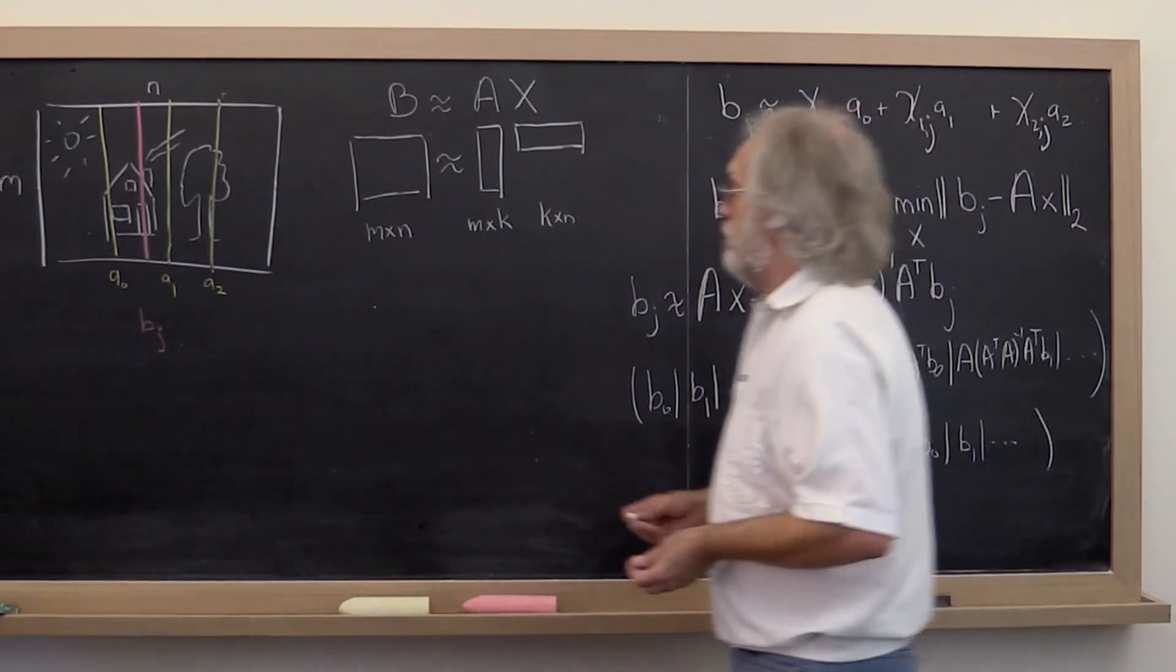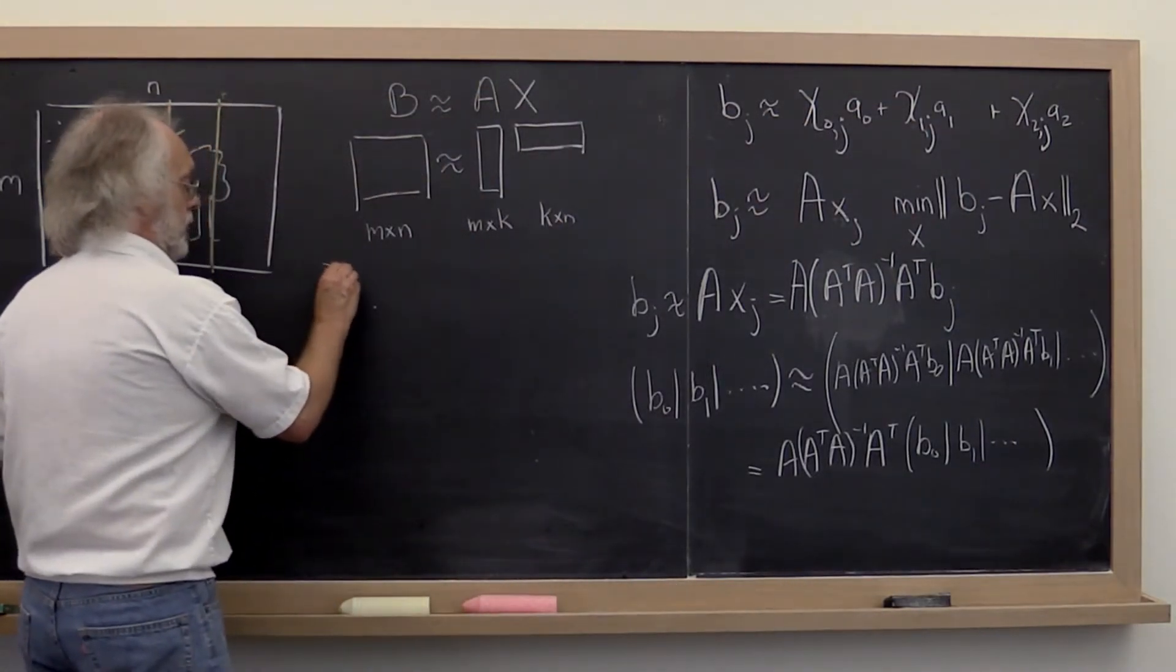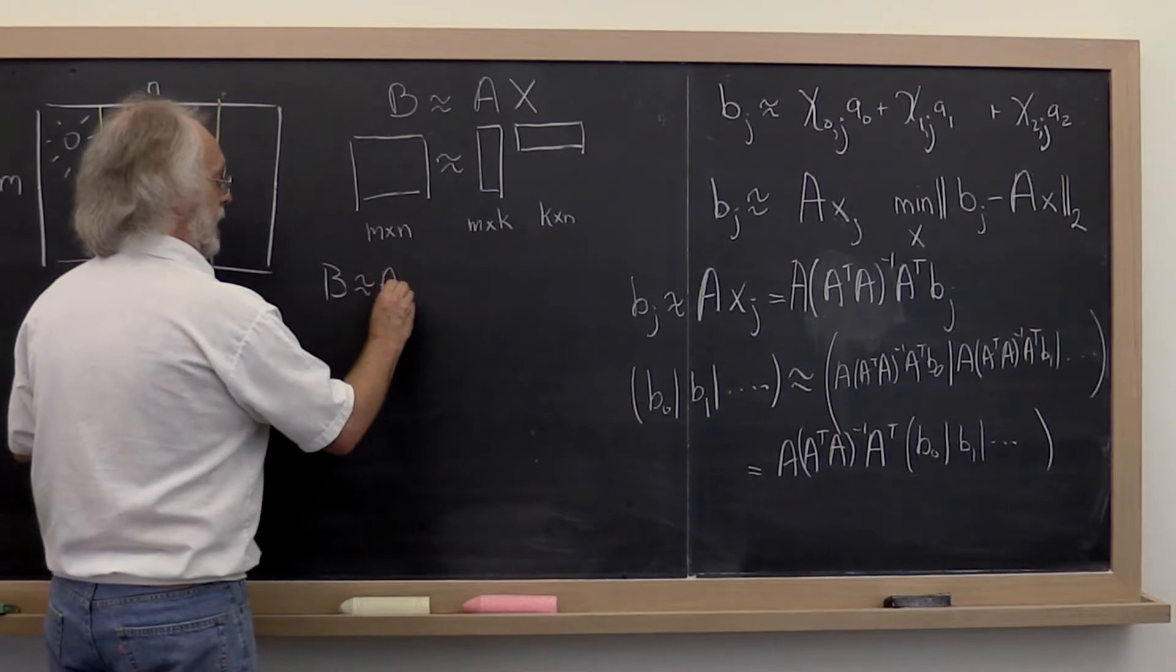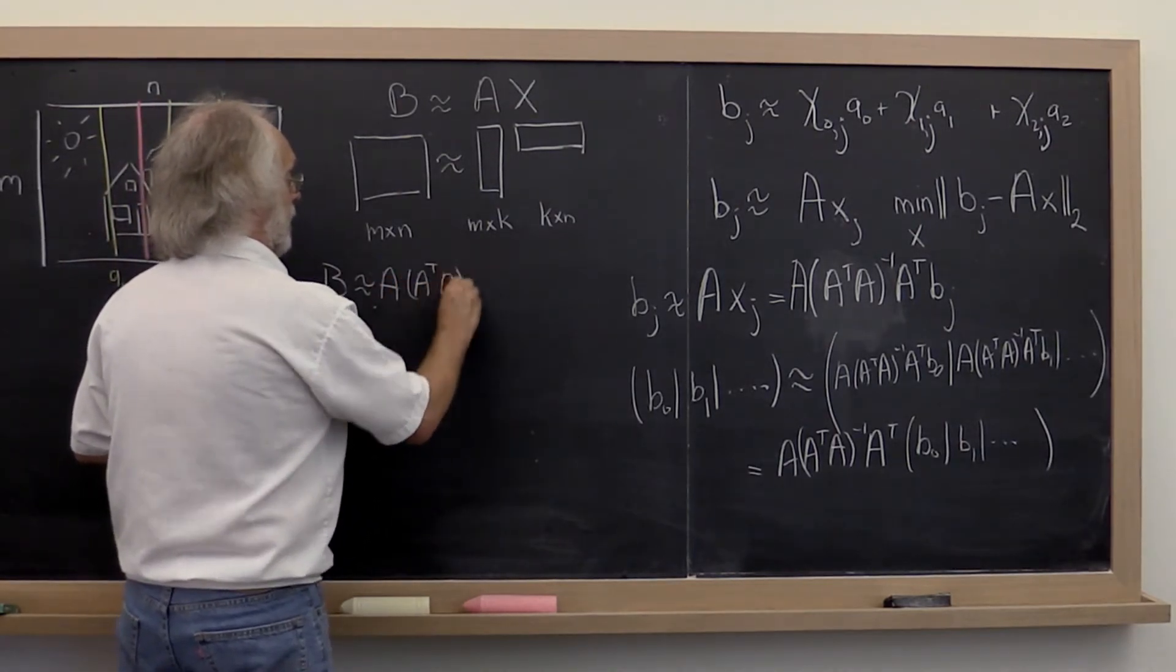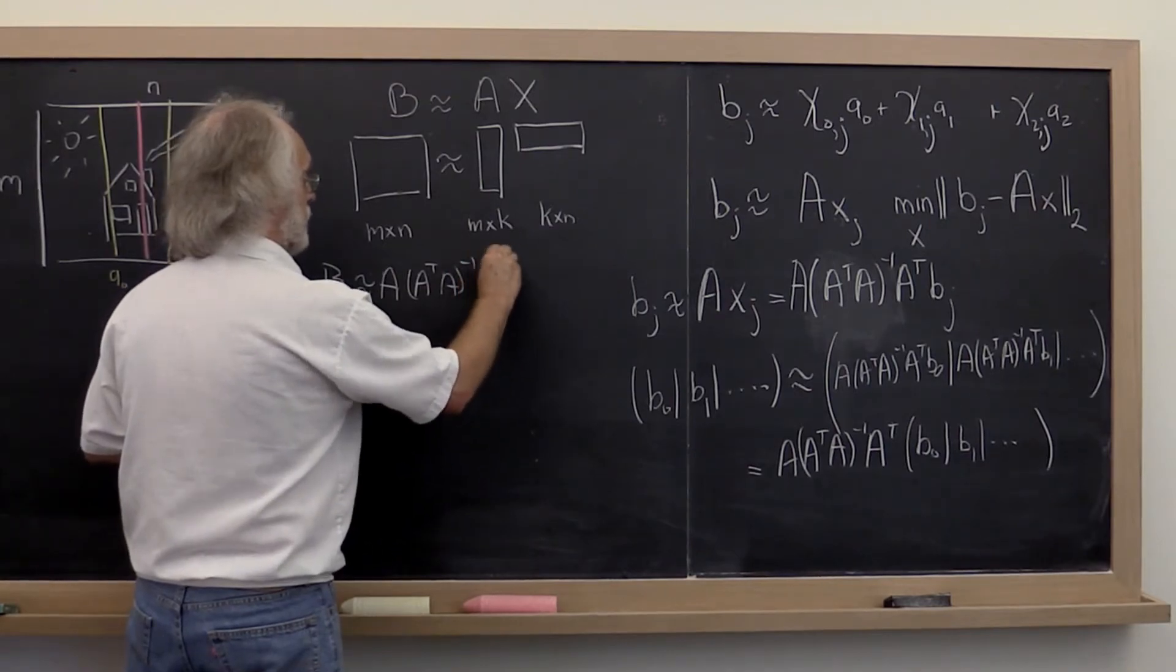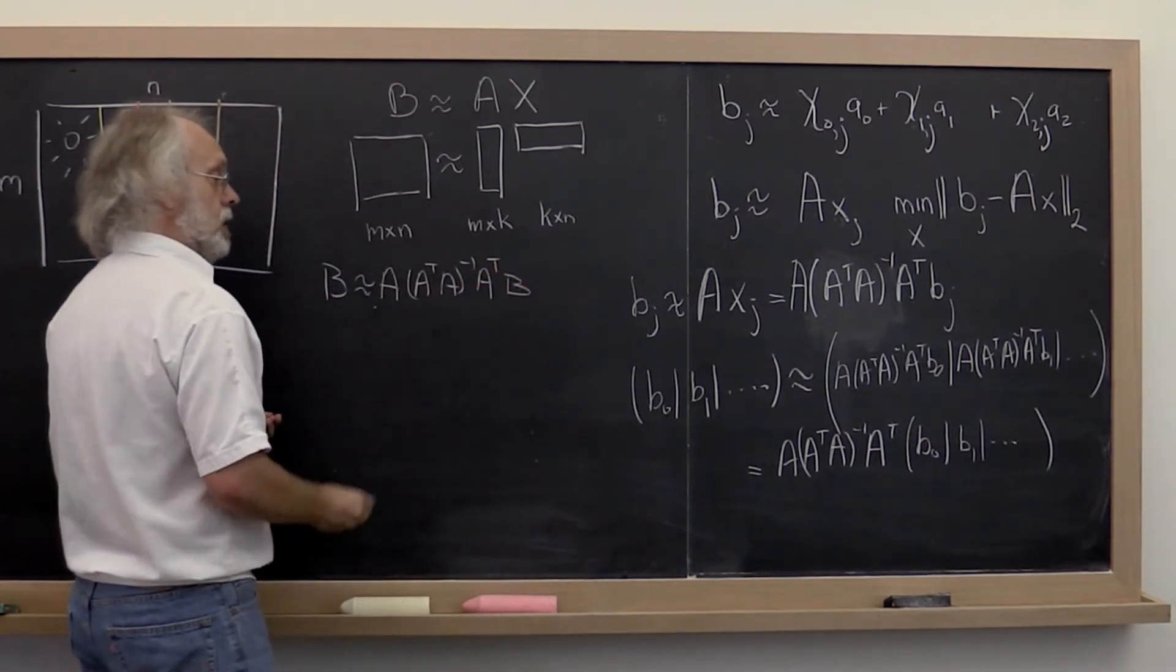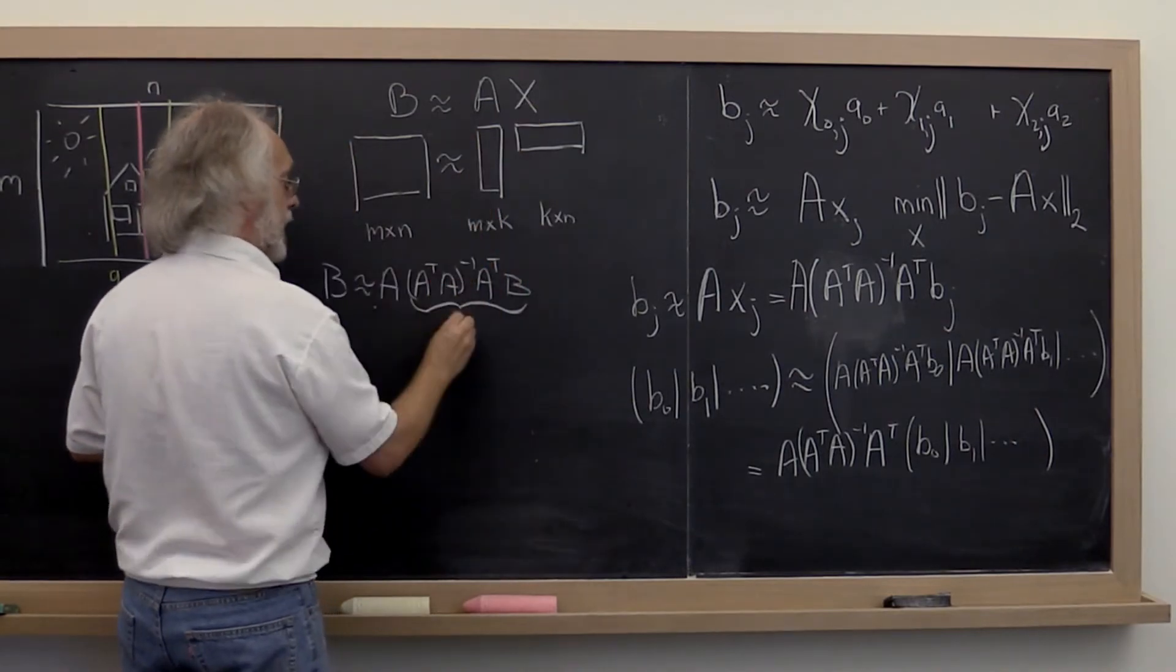This is equal to that and therefore this is approximately equal to that. So what do we have now? We have that B is approximately equal to A times A transpose A inverse A transpose times B. We can choose this to be our matrix X.